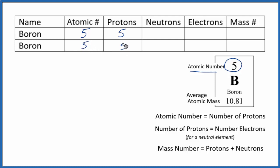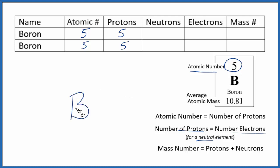We'll talk about isotopes a little bit later. For a neutral element, the number of protons equals the number of electrons. Boron as listed on the periodic table — just 'B' — is a neutral element. All elements on the periodic table are listed in their neutral state. If you had a positive or negative sign, like three plus, that would be an ion, not a neutral element.